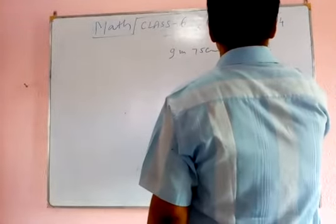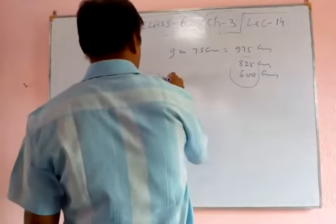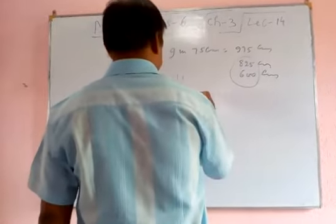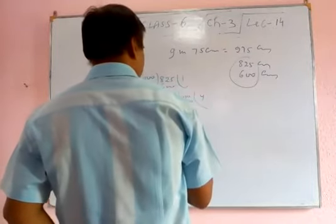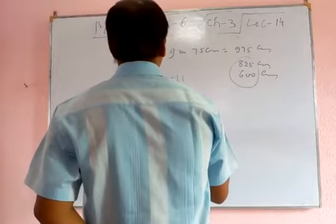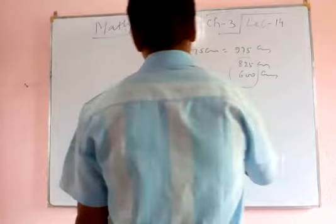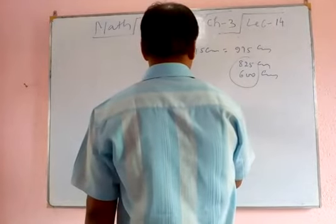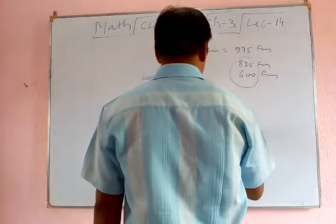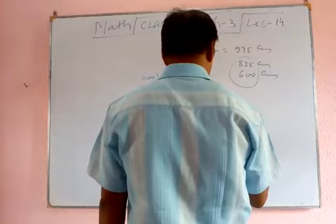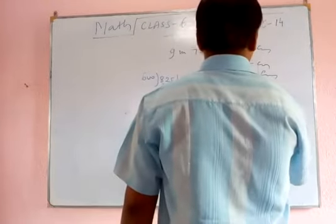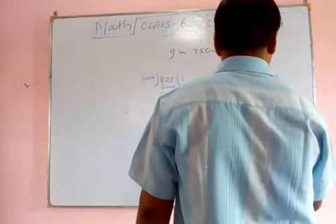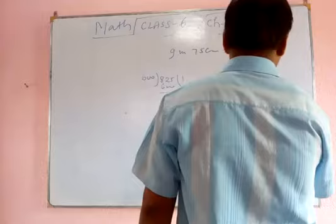So first we have to take the HCF of 600 and 825. One time 125 will be there. 4 times, that is 150. That is 150. So we have to take the HCF, 4 times 25, that is 150. It will be 25 and 975.